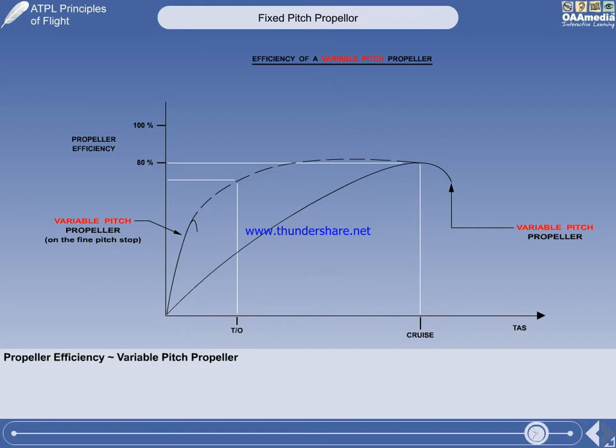Therefore, a variable-pitch propeller will give optimum efficiency and performance throughout the aircraft's operating speed range. The mechanism that changes the blade angle in flight was fully explained during your study of piston engines, and will not be repeated here.